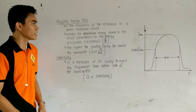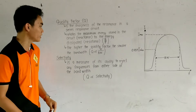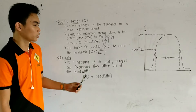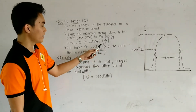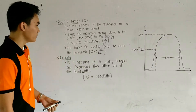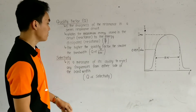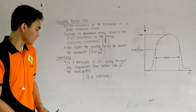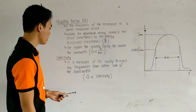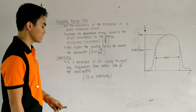Quality factor is the sharpness of the resonance in a series resonance circuit. It relates the maximum energy stored in the circuit, or the reactance, to the energy dissipated by the resistance — or to put it simply, it is reactive power over real power. The higher the quality factor, the smaller the bandwidth, which means quality factor is inversely proportional to bandwidth, while selectivity is a measure of its ability to reject any frequencies from either side of the bandwidth, and quality factor is directly proportional to selectivity.